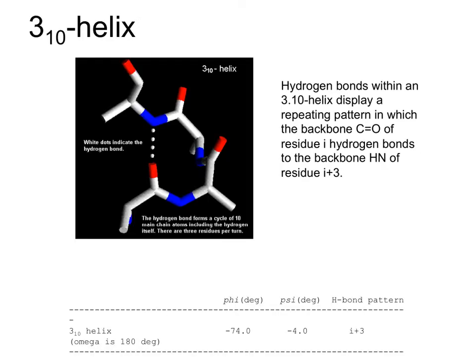310 helices have phi and psi angles of negative 74 and 4 respectively. They have an I to I+3 hydrogen bond pattern. The hydrogen bonds within a 310 helix display a repeating pattern where the backbone carbonyl CO at residue I hydrogen bonds to the backbone HN of the I+3 residue. Students are expected to know these phi, psi angles and hydrogen bond patterns for problem sets and exams.